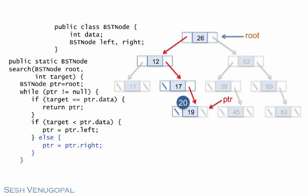If the loop is exited after all iterations are done, it must be because PTR has gone to null. Which means we went all the way down the tree along the search path and fell off the bottom without finding the target. So here, we should return null. And that's it.